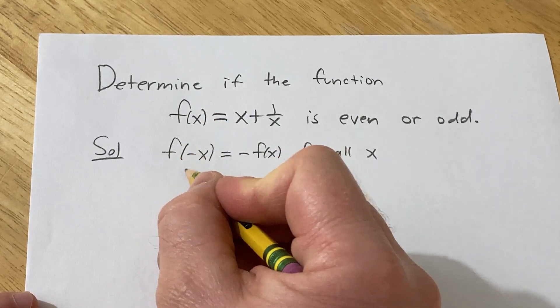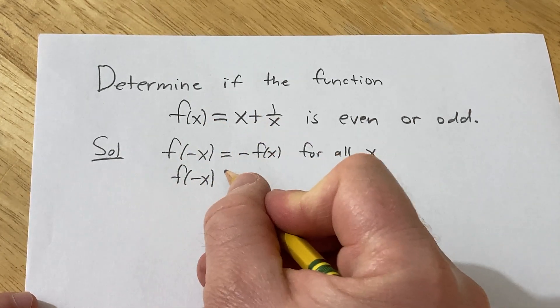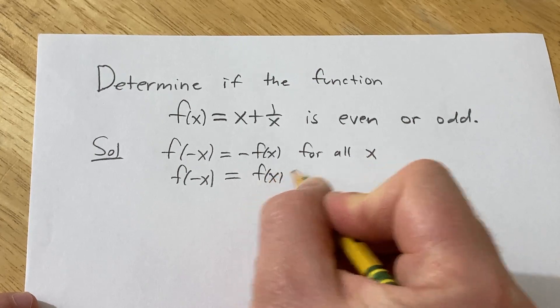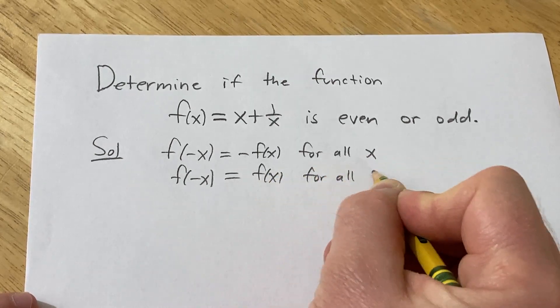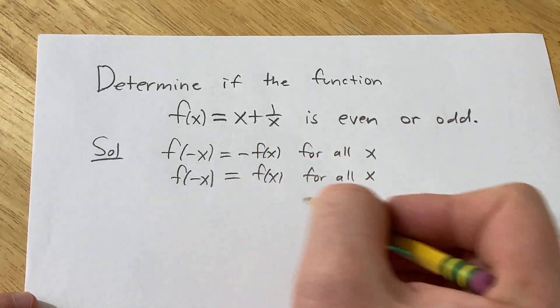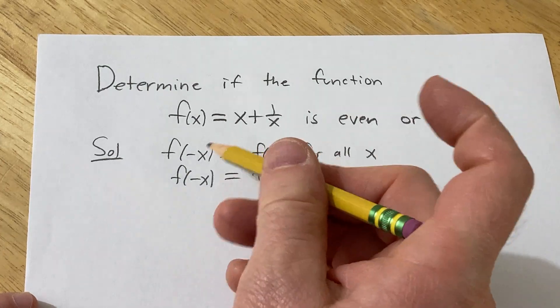If your function is even, when you plug in negative x, you just get back f(x), and this is for all x. So to determine if our function is even, we just plug in negative x.